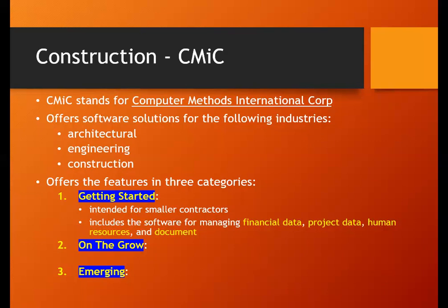All financial data — like the cost to construct a particular building — and all project-related data can be stored onto cloud servers. Anyone wanting to access that data just needs internet connectivity. The second category, On the Grow, includes all features from Getting Started plus one additional feature: Customer Relationship Management software, allowing interaction and communication with customers and stakeholders involved in the business.